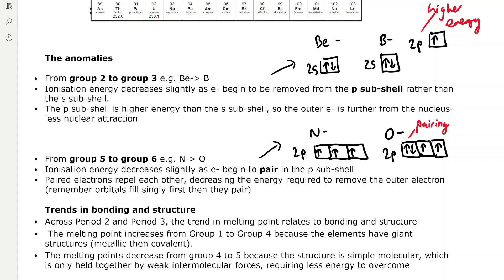There is also a slight anomaly from group 5 to group 6 — for example, nitrogen to oxygen — where ionisation energy decreases slightly because electrons begin to pair in the P subshell. Paired electrons repel each other: an orbital holds up to two electrons of opposite spin, and because electrons are negatively charged they repel, decreasing the energy required to remove the outer electron. Orbitals fill singly first, then pair. In nitrogen each orbital in the 2P subshell is filled singly with no pairing, whereas in oxygen there is pairing of electrons in a 2P orbital, making it easier for the atom to lose an electron and form a positive ion.